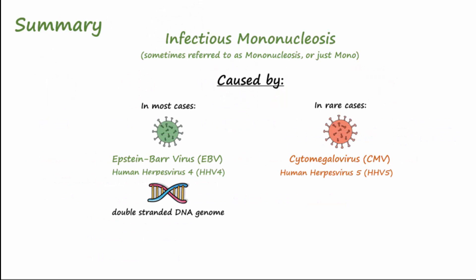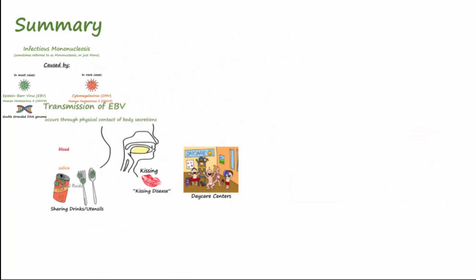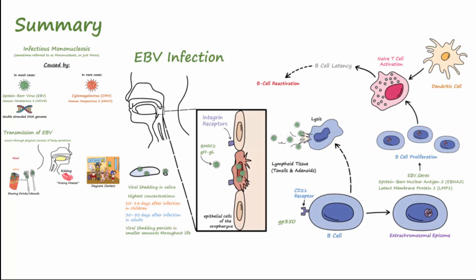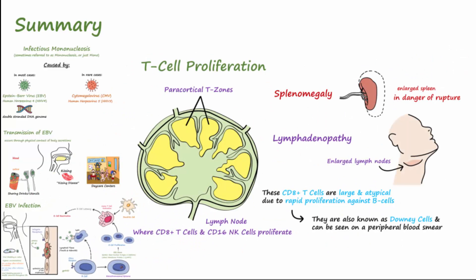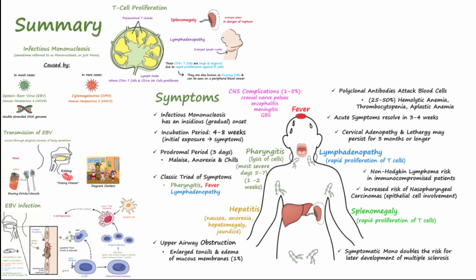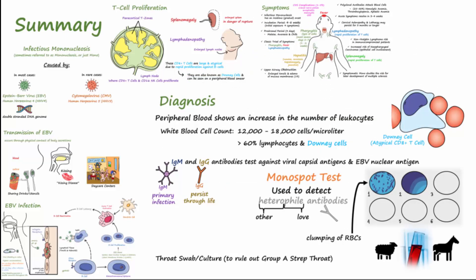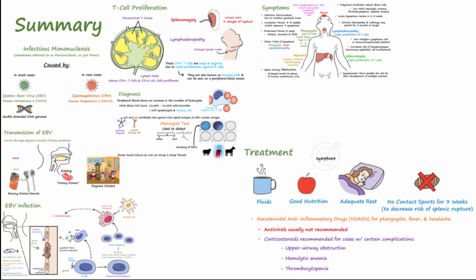In summary, mono is primarily caused by Epstein-Barr virus. Transmission is mainly through saliva. EBV mainly infects epithelial cells of the oropharynx and B cells. T-cell proliferation causes lymphadenopathy, splenomegaly, and hepatomegaly. Main symptoms include the classic triad of pharyngitis, fever, and lymphadenopathy; splenomegaly, CNS complications, and hepatitis may also occur. Peripheral blood shows increased levels of white blood cells, and antibodies against viral components may be measured in the blood. The monospot test tests for heterophile antibodies. Treatment targets symptoms.